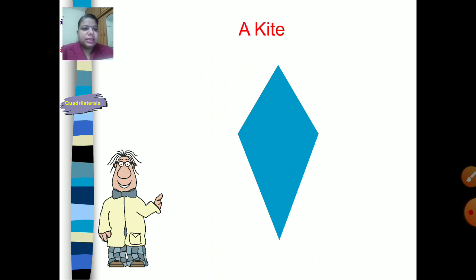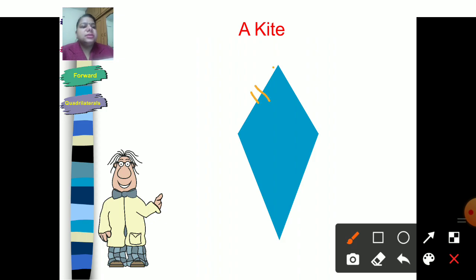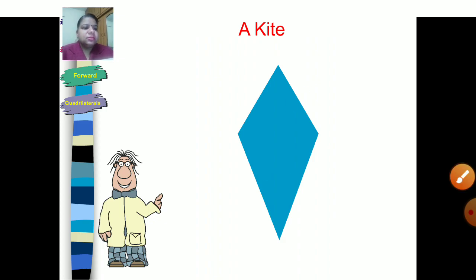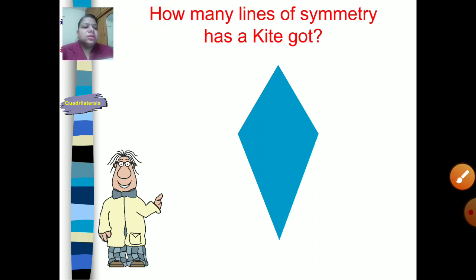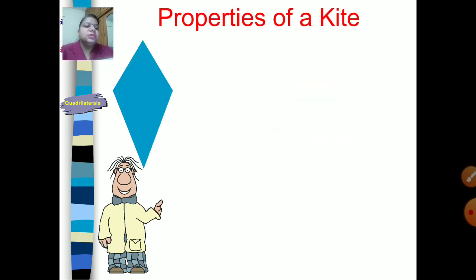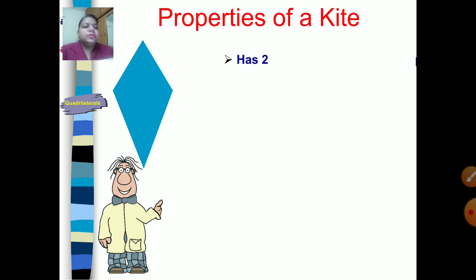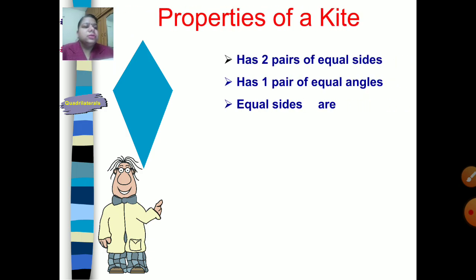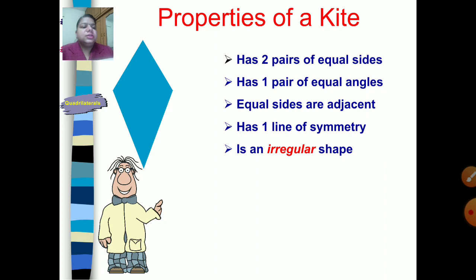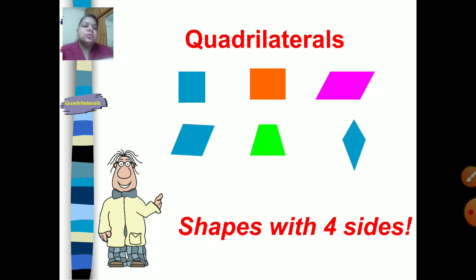This shape is a kite because two adjacent sides are equal to each other on one pair, and the other two adjacent sides are also equal. A kite has only one line of symmetry. It has two pairs of equal adjacent sides, but opposite sides are not the same, one line of symmetry, and is an irregular shape.